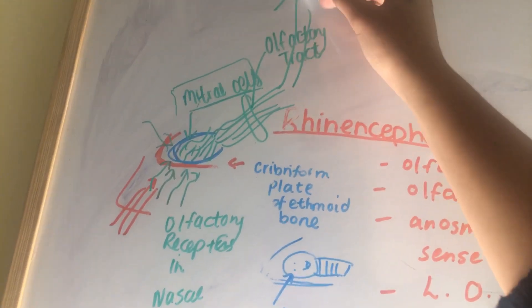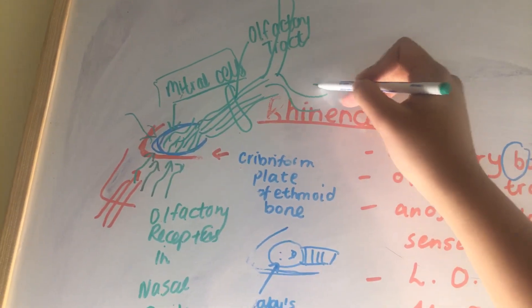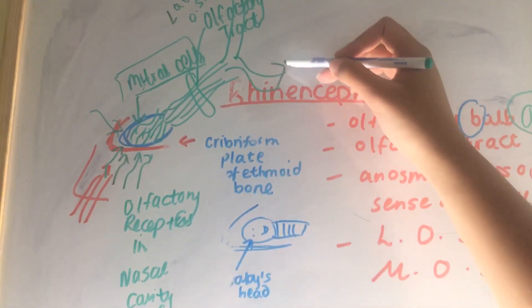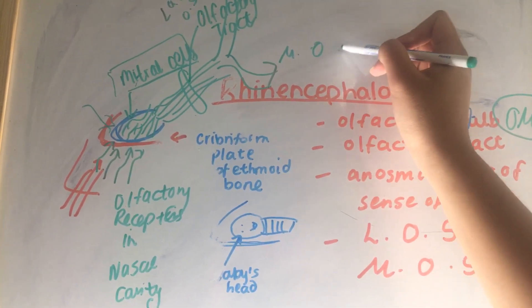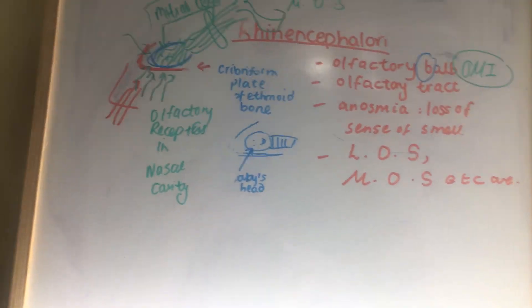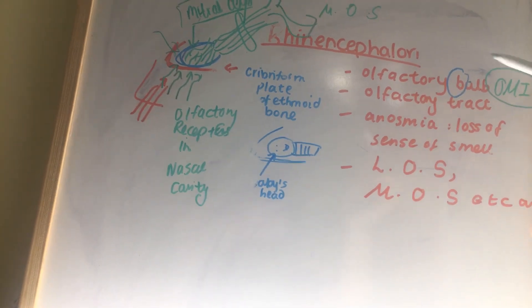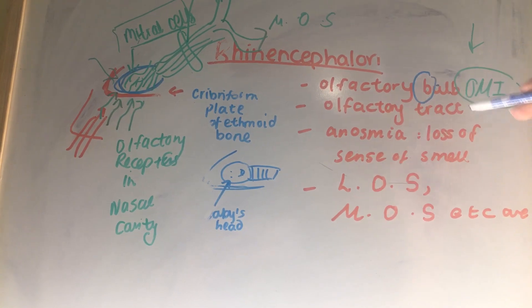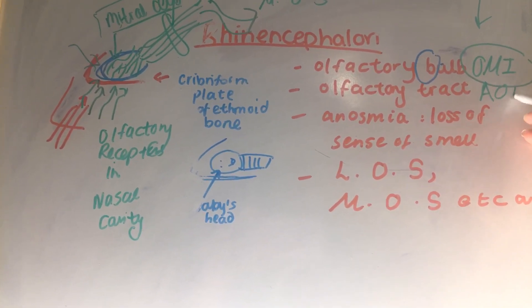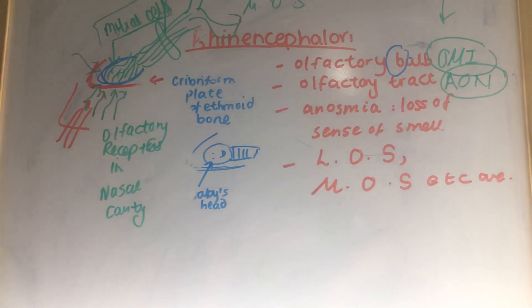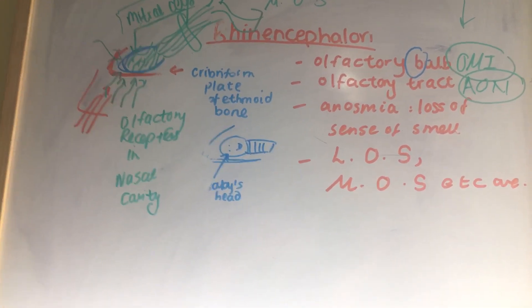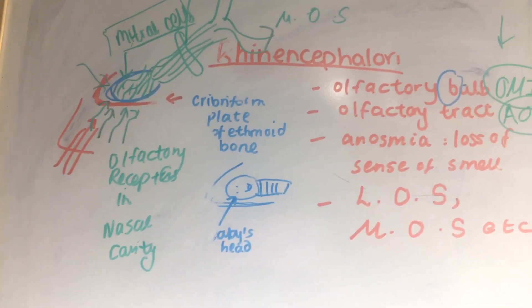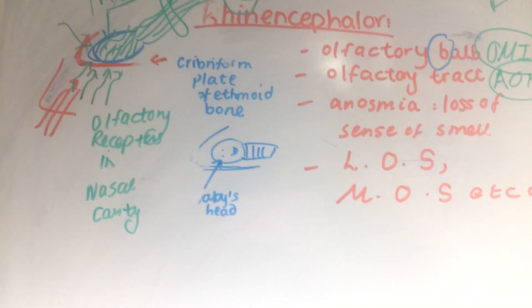The olfactory tract eventually splits into the lateral olfactory stria and the medial olfactory stria. In the region of the olfactory bulb you had mitral cells (OMI), whereas in the olfactory tract you have AON — the anterior olfactory nucleus.